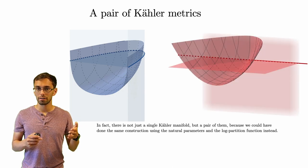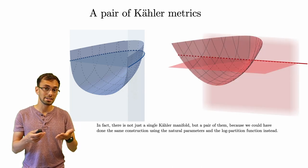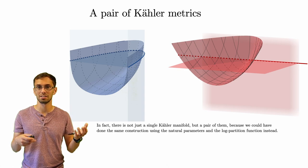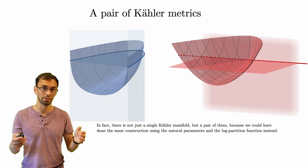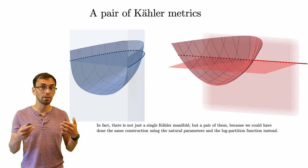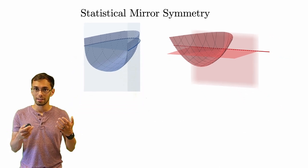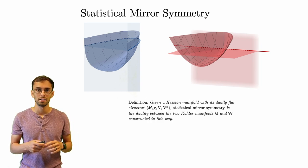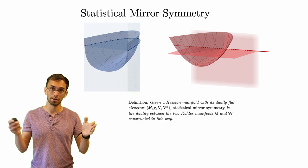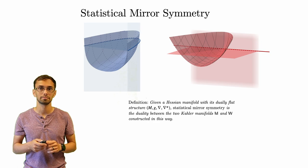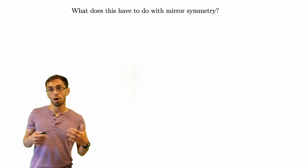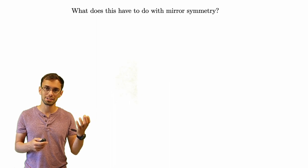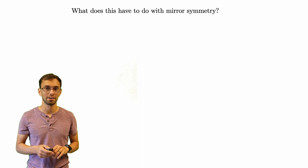That gives one Kähler metric. But in fact, I could have done the same construction using the natural parameters and the log partition function — just using the other parametrization instead of the sufficient statistics and the Legendre transform. Doing so, I would get another Kähler manifold. So this is the definition of statistical mirror symmetry: if we start with a Hessian manifold with its dually flat structure, statistical mirror symmetry is the duality between the two Kähler manifolds which we construct in this way.